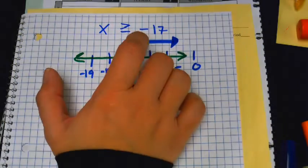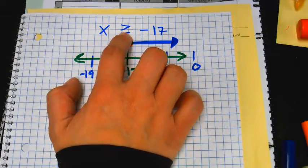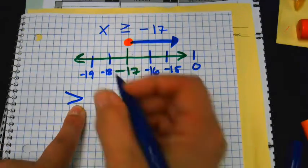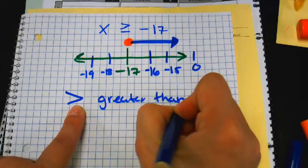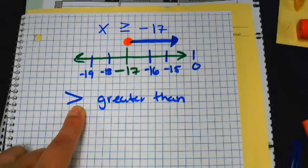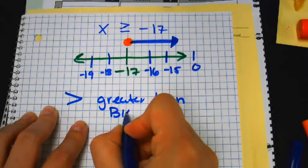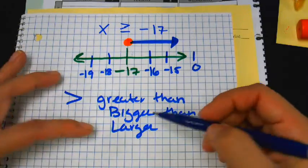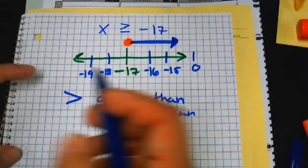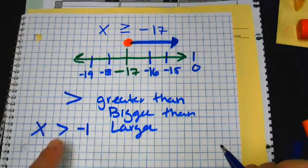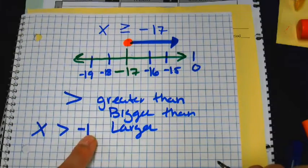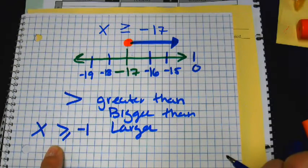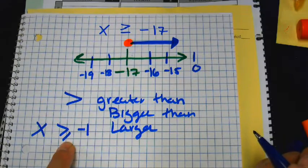We're confused on what the symbol means. Let's break it down — this one is greater than. I'm looking for numbers that are bigger, greater than, larger. X is greater than negative one, so I'm looking for numbers that are bigger or larger than negative one. If I put a line underneath, that just means it could also equal it — that little line just means equal to.